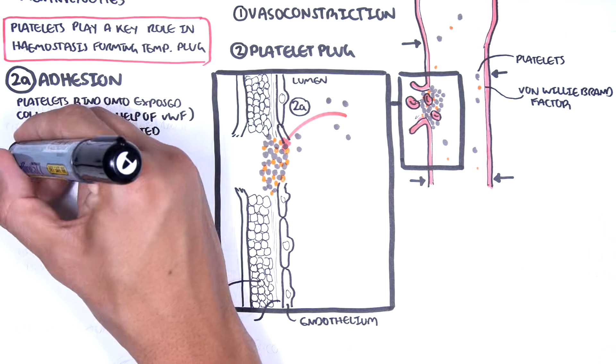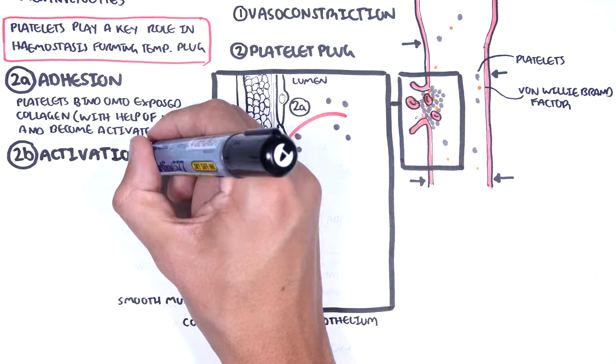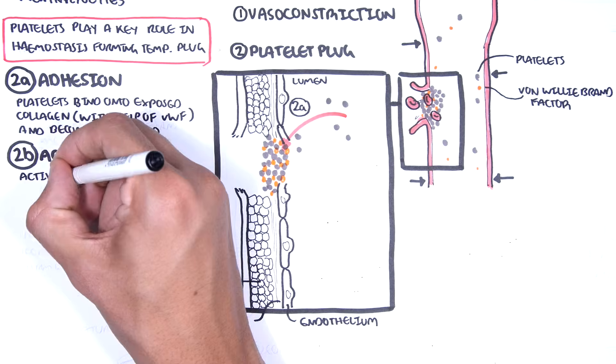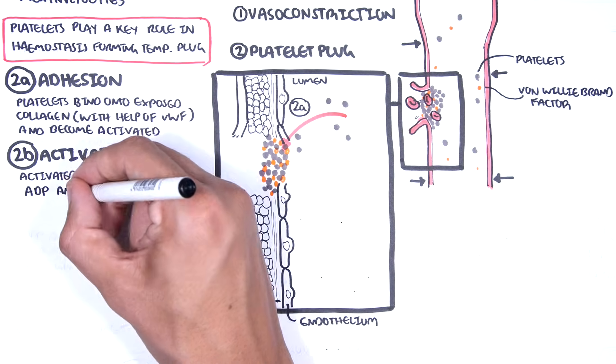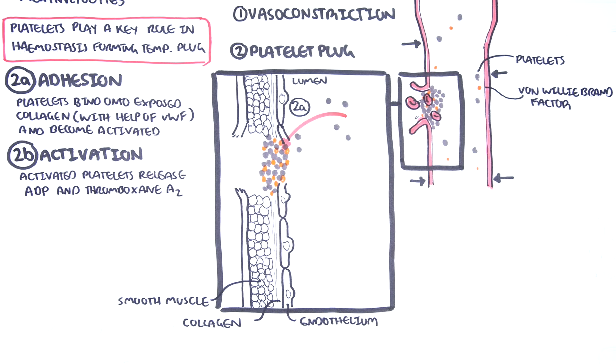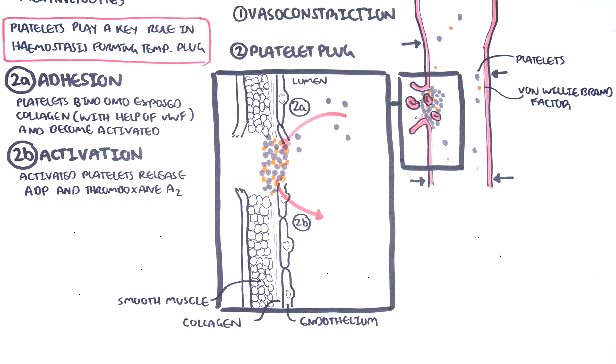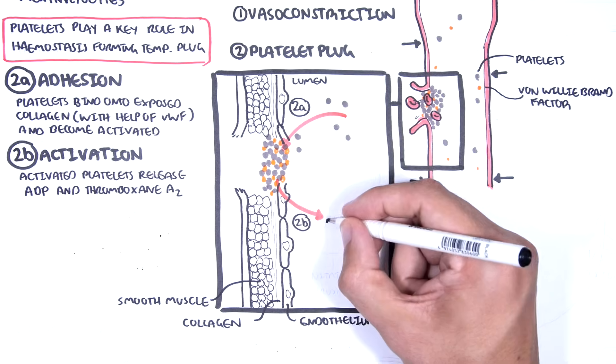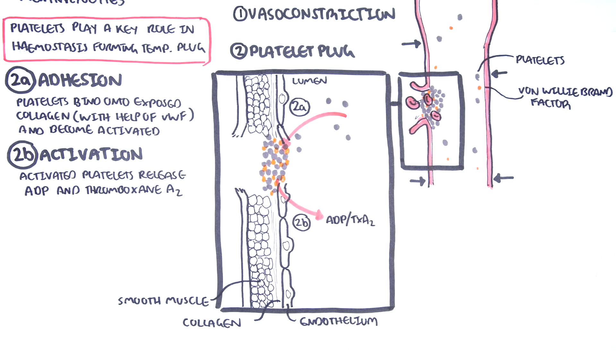The second is platelet activation. The activated platelets release thromboxane A2 and ADP to recruit more platelets. So here you can see the platelets releasing ADP and thromboxane A2, which in turn will activate and recruit more platelets.